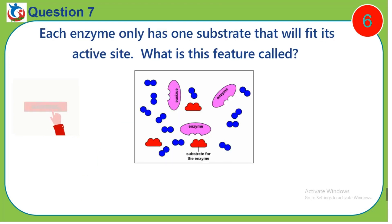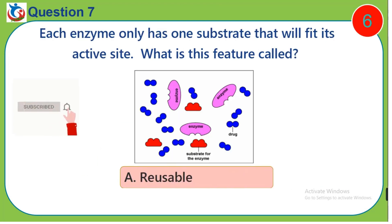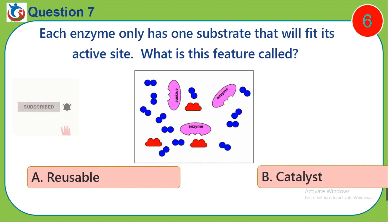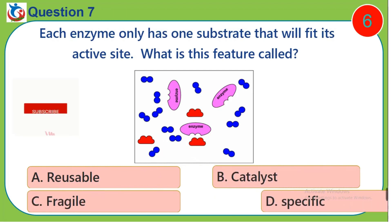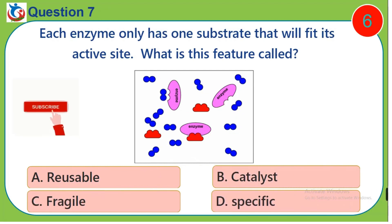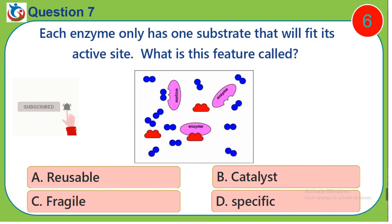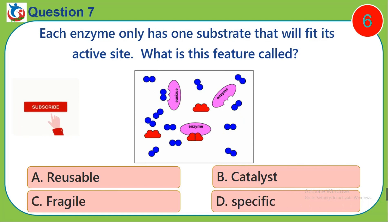Question 7. Each enzyme only has one substrate that will fit its active site. What is this feature called? A. Reusable. B. Catalyst. C. Fragile. D. Specific.